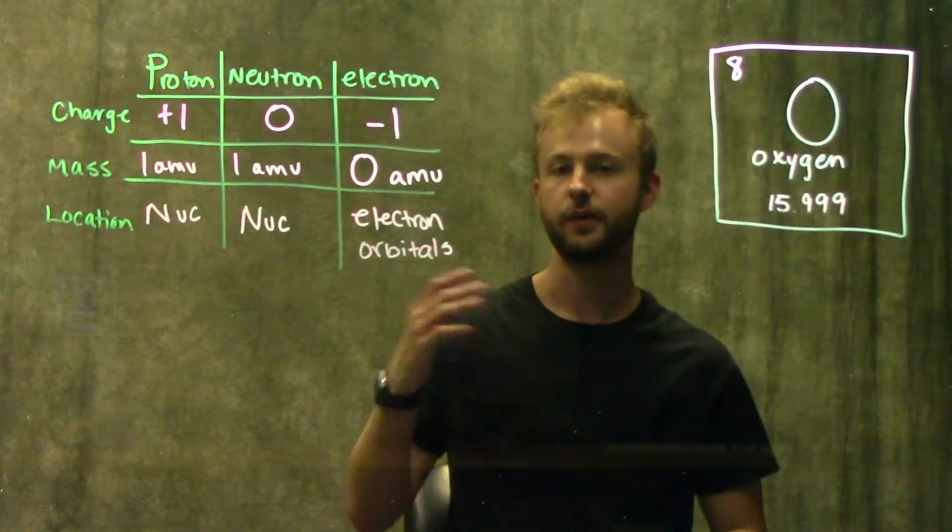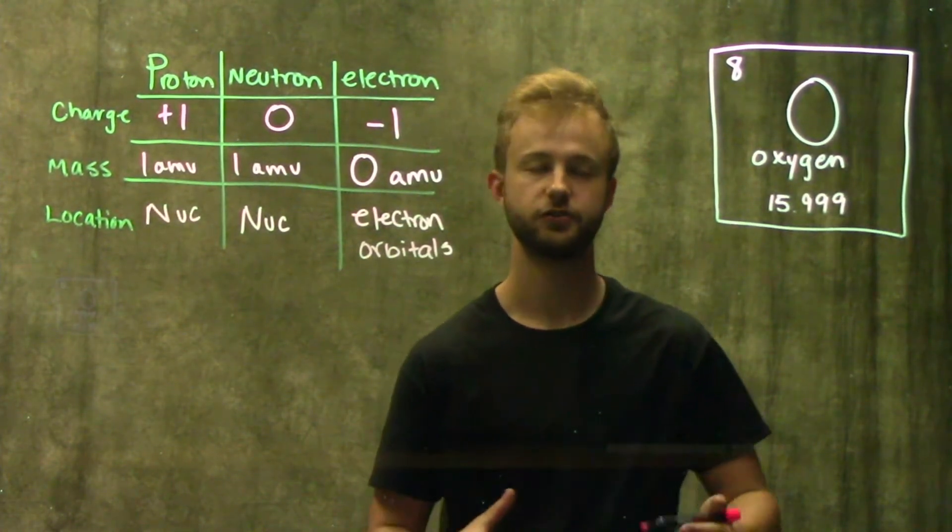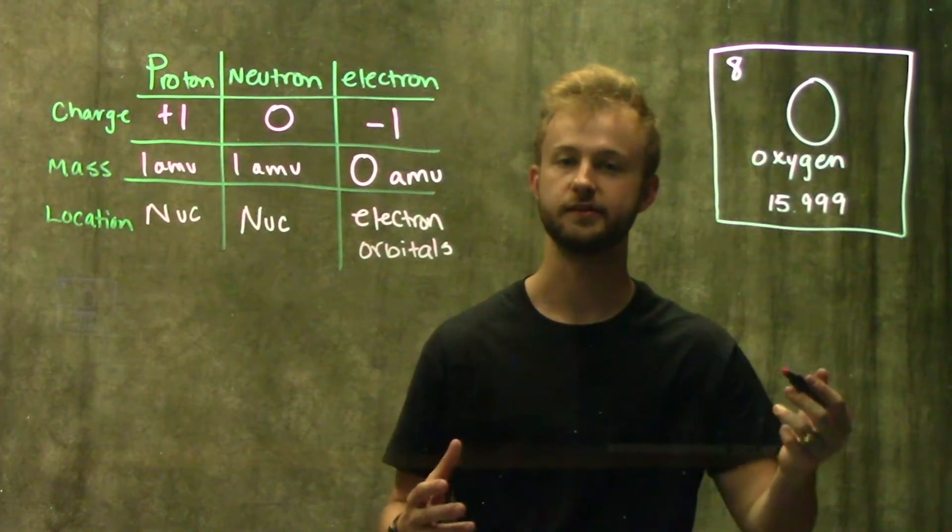So now that we know a little bit about the three subatomic particles, we can move on to atomic mass. We're going to be working with oxygen just as an example.